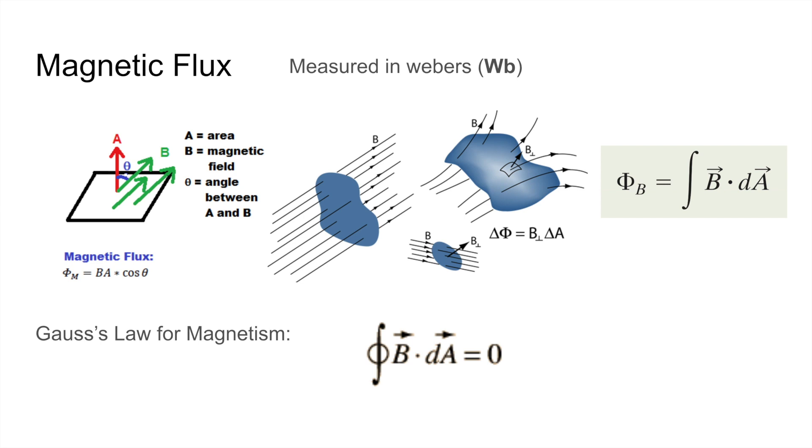Now if we have a curved surface, all we need to do is take an integral of this. Gauss's law for magnetism states that in a closed surface, the integral of magnetic field over area is equal to zero.